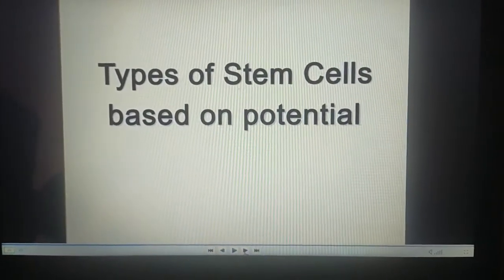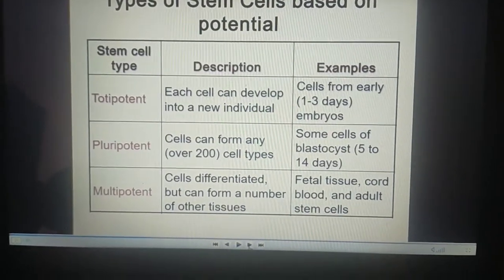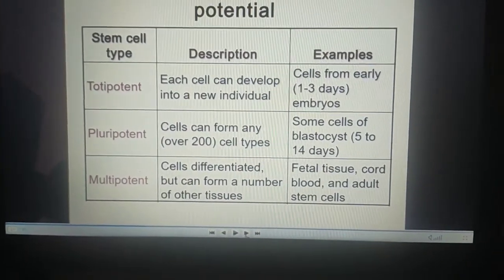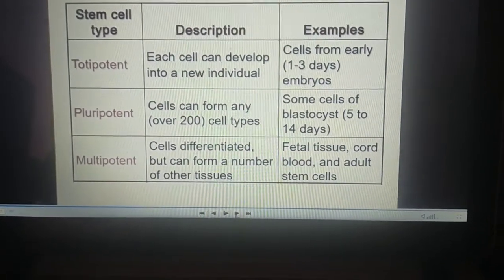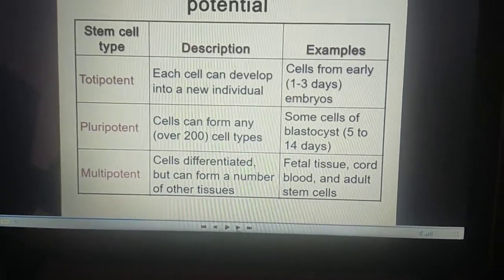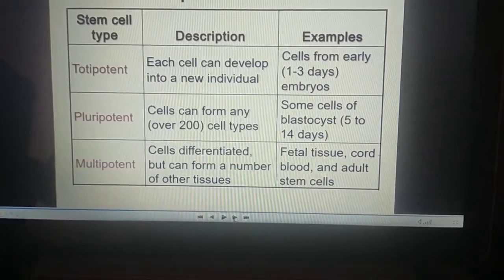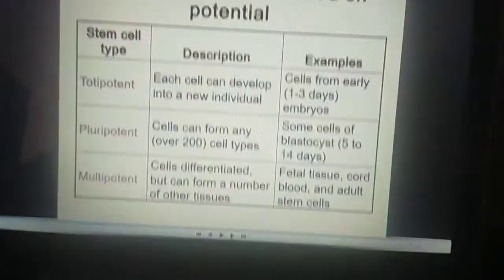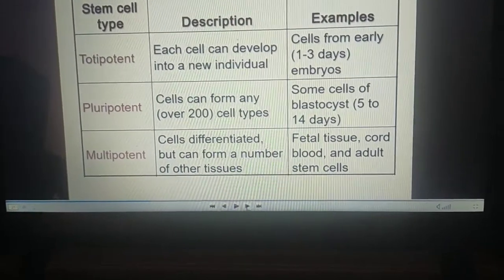Types of stem cells based on potential: first, totipotent stem cells, where a single cell can develop into a new individual — for example, cells from early one-to-three-day-old embryos. Pluripotent stem cells can form any cell type, found in the blastocyst at five to fourteen days. Multipotent stem cells can differentiate into a number of cell types found in fetal tissue, cord blood, and adult tissue.